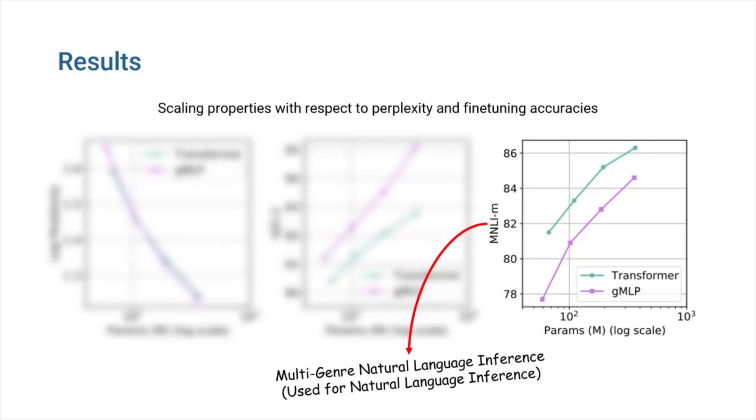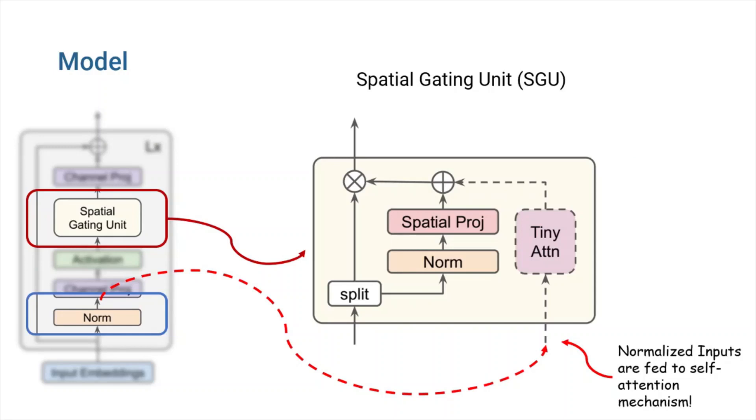In order to fix this, the authors tried to incorporate a tiny attention mechanism in their GMLP model. To accomplish so, they tweaked the spatial gating unit and added a single-headed self-attention unit fed by the normalized inputs. This new model was given the name AMLP by the authors.